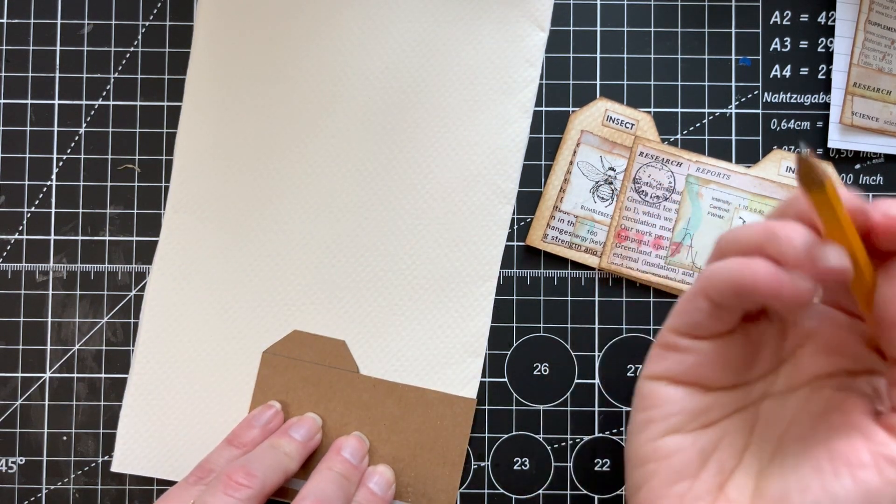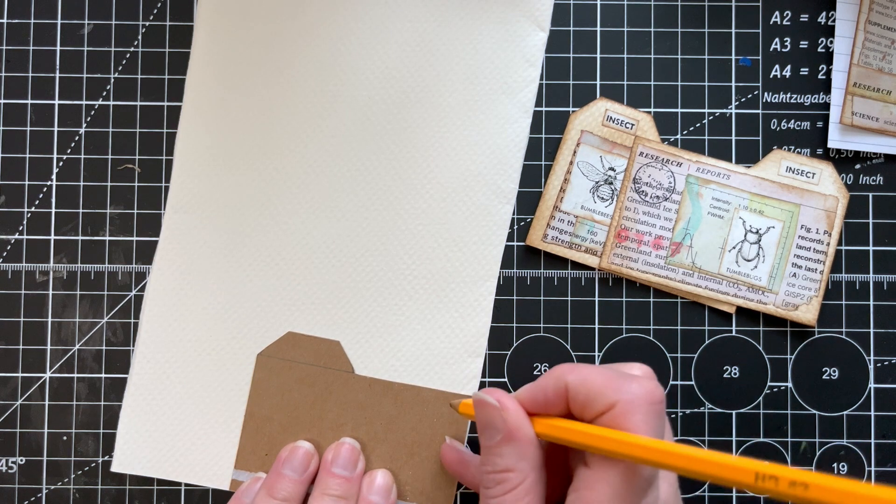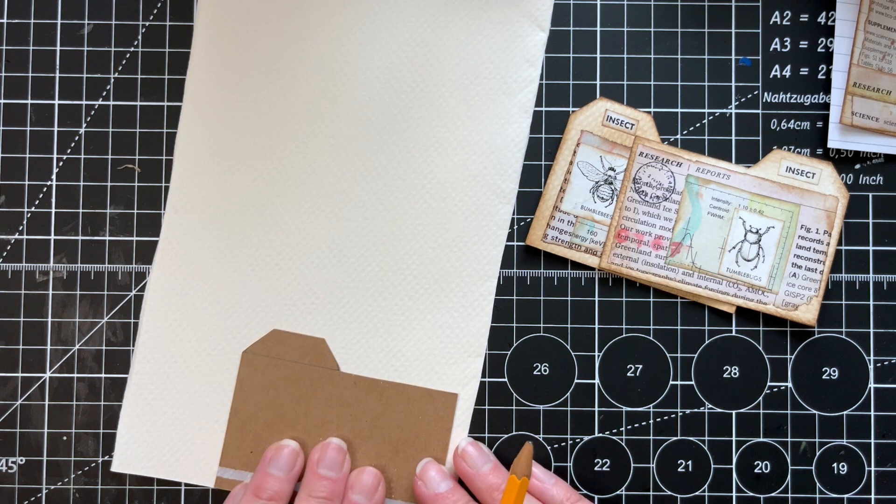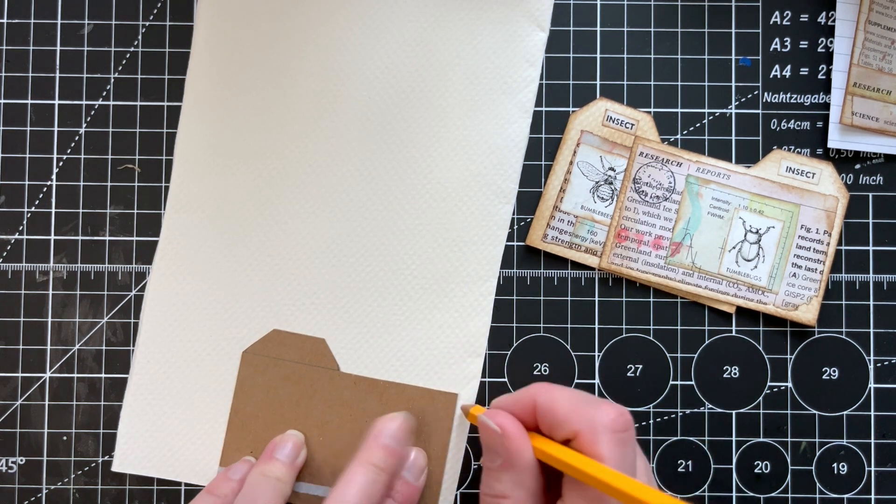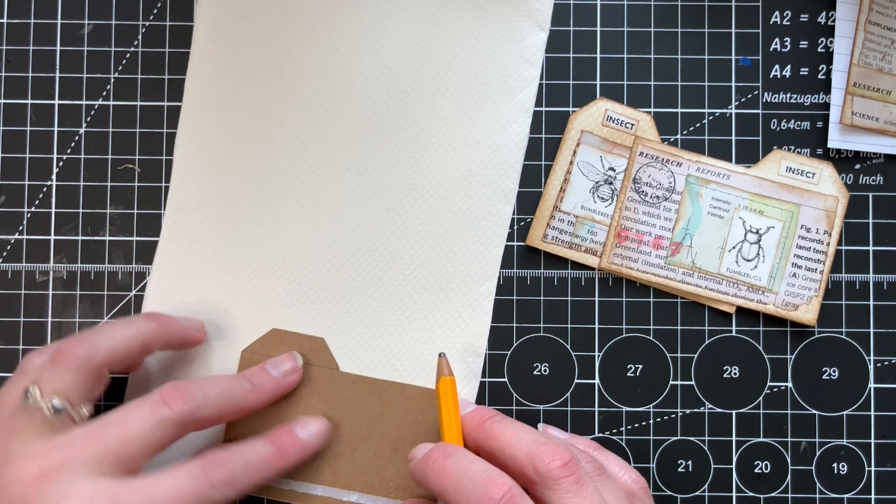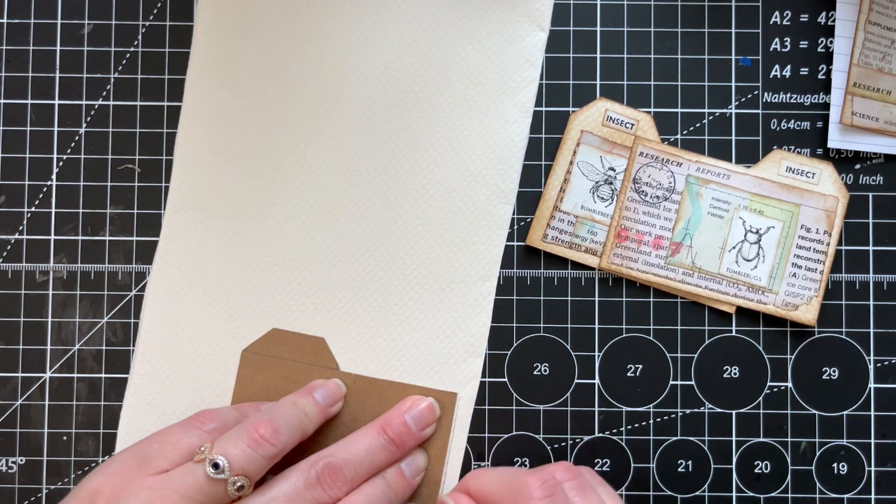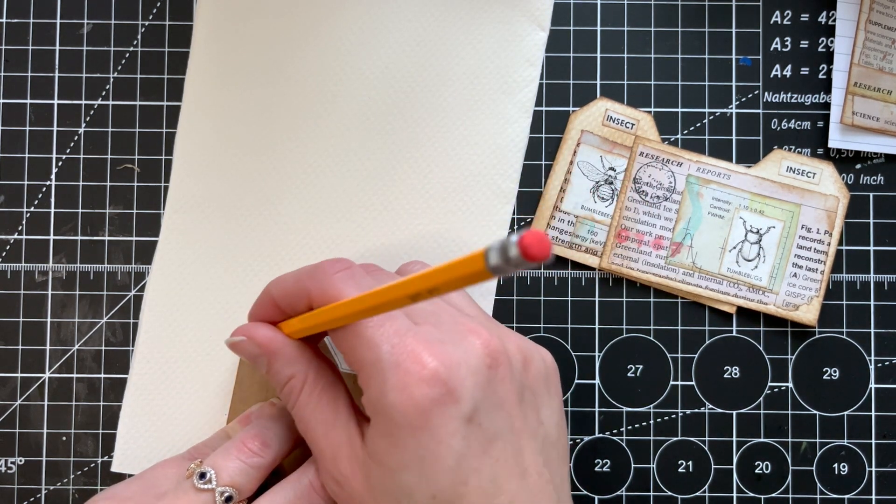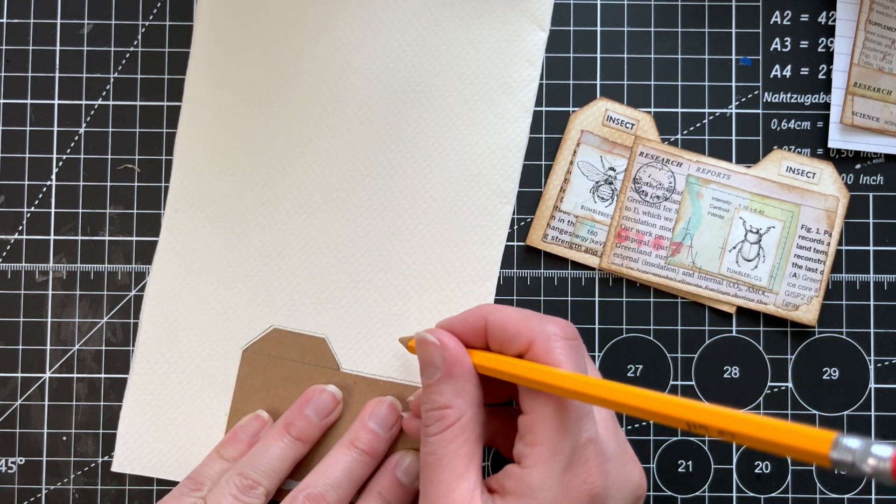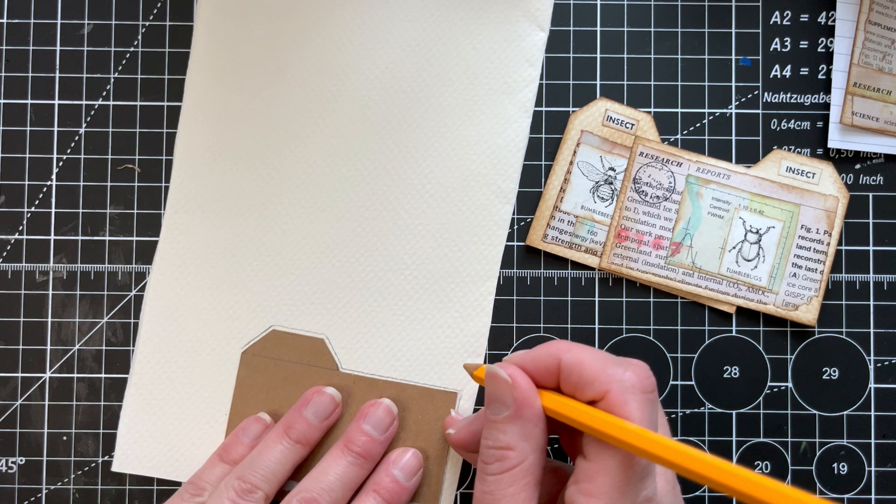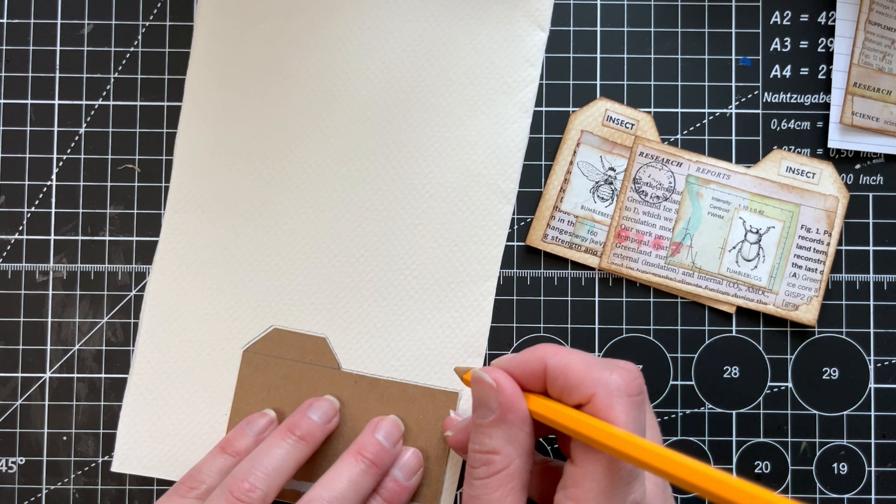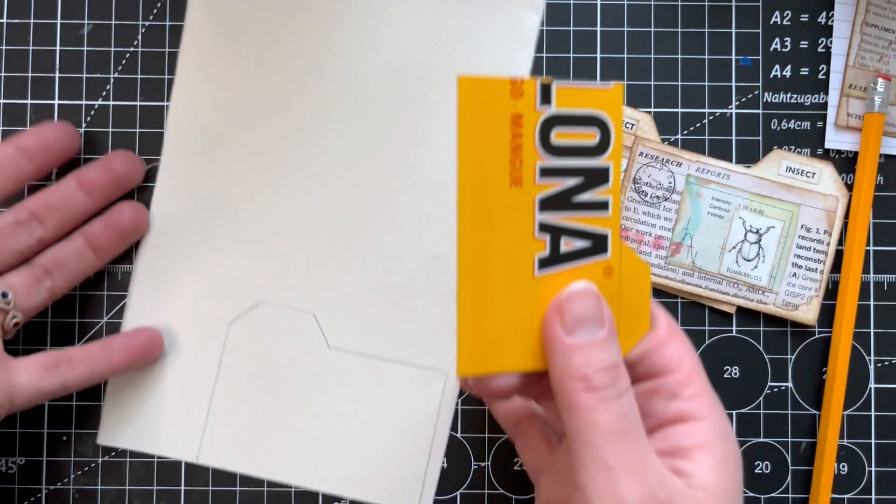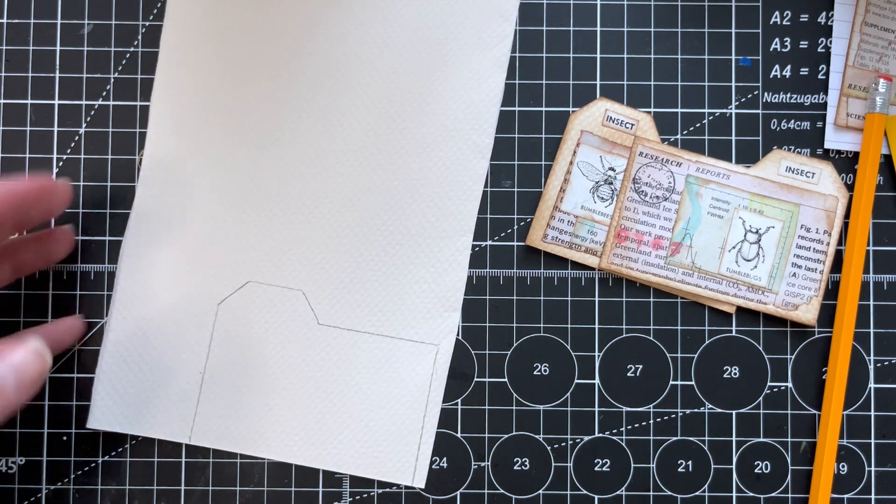And then I'm going to grab a pencil and line this up. It doesn't have to be perfect. This is not actually, I'm trying to line it up, but this edge is not straight. And then I just trace it roughly. We're going to cut it, so don't worry about being perfect. The line is going to go away, but this will give you the general shape.